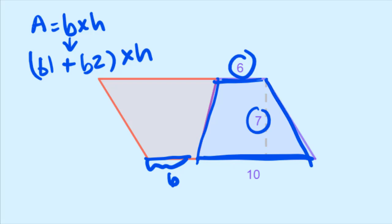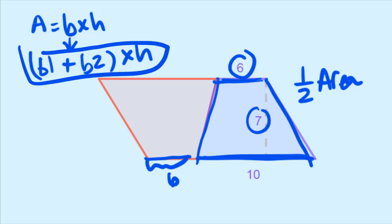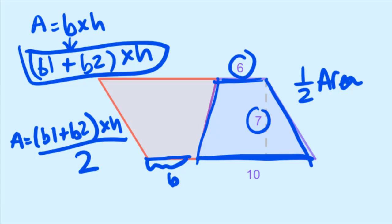But now what if I only want the area for one trapezoid? Well, one trapezoid is half the area of my parallelogram, right? Because this is made up of two trapezoids. So I take this area that I've just created for this parallelogram, where I add my two bases together, and I would divide it by two.